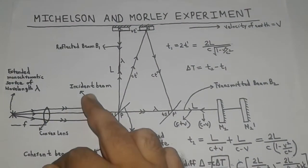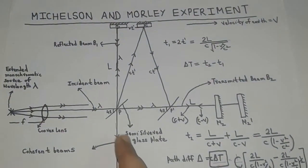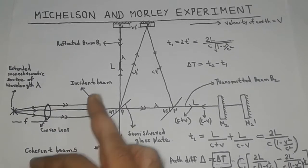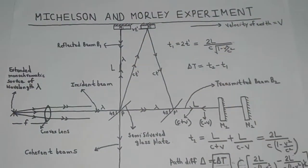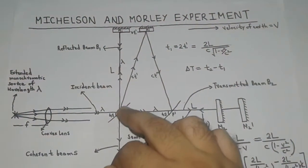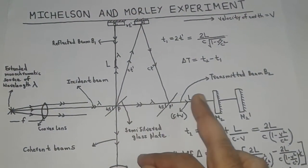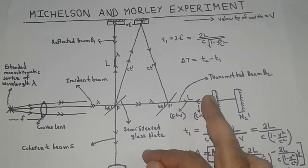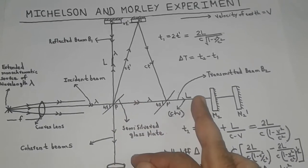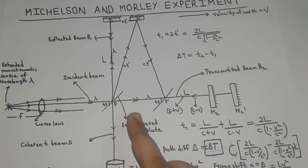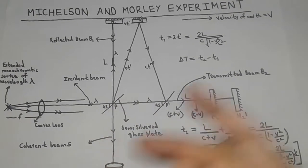When apparatus is rotated by 90 degrees, the telescope comes in the direction of motion of earth which is in this direction. Now the reflected beam B1 will not be with the earth motion and the transmitted beam B2 which now will be in this direction will be with the earth motion.